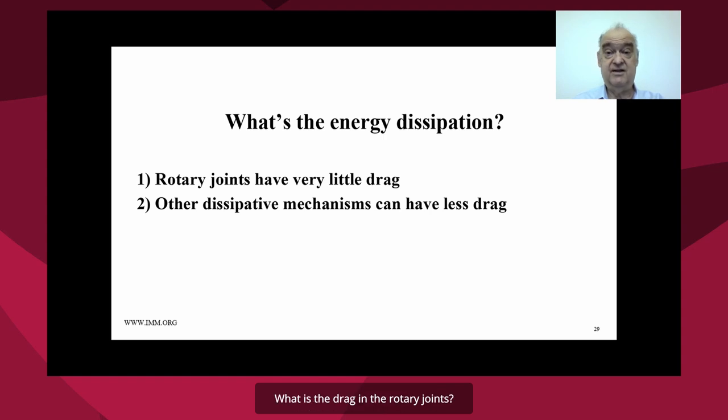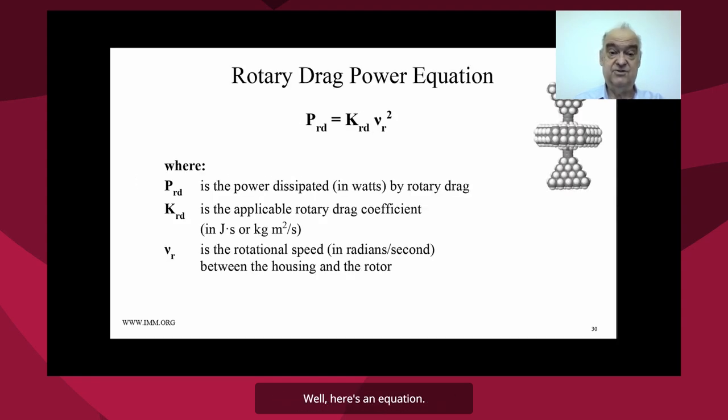What is the drag in the rotary joints? Well, here's an equation. The power dissipation from the rotary joints is some appropriate constant multiplied by the rotational velocity squared. So there is an equation. And the equation has a constant in it, and we need to figure out the constant.